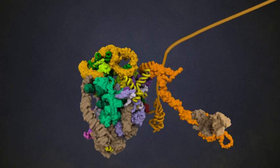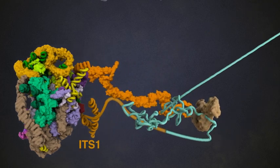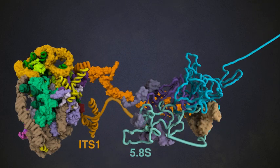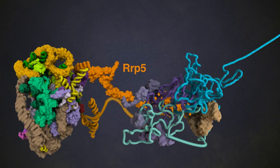While the 90S is forming, the construction of the 60S subunit begins. First, ITS-1 in orange emerges, followed by the 5.8S, ITS-2, and 25S rRNA. The dual assembly factor RRP-5, which is part of the 90S subunit, plays a key role in early pre-60S formation by recruiting the NOC-1-NOC-2 complex through a long terminal extension.